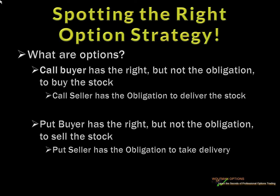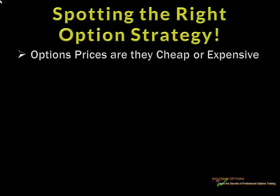Just because we have a bullish assumption doesn't automatically mean we do the long call — that's not all there is to it. We need to look at how we buy things. Do you like to buy when they're super expensive? I like to buy when they're super cheap. When you have a bullish assumption, we don't always know if those options are cheap or expensive — that's something we have to determine immediately. We've already determined our trend, pattern, support and resistance for the swing trade; now we need to look at implied volatility.